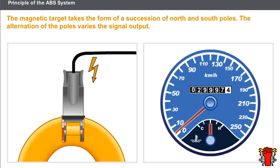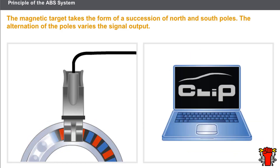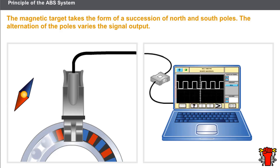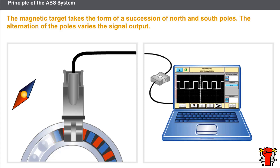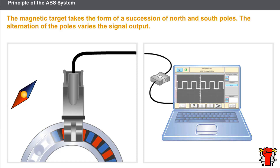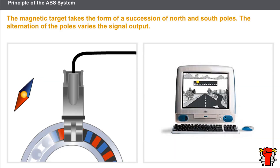The active sensor is supplied by the computer and measures the speed of rotation from 0 km/h. The sensor is fixed opposite the target; the target is sometimes built into the wheel bearing. The magnetic target takes the form of a succession of north and south poles. The alternation of the poles varies the signal output, which takes the form of a square pulse signal of variable frequency. When replacing a wheel bearing, comply with the recommendations in the technical documentation.